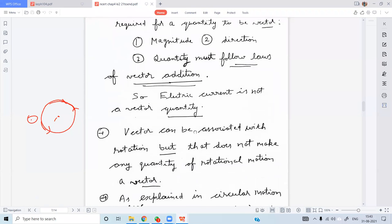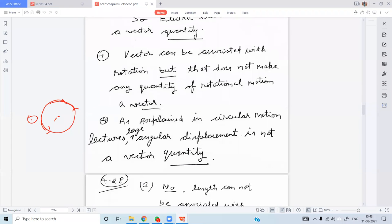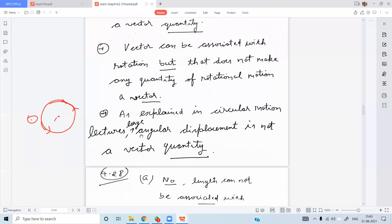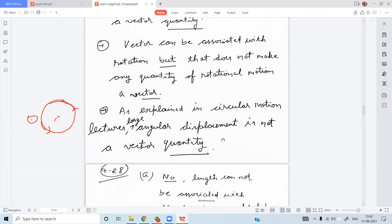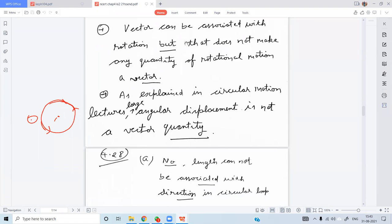So for problem 4.27: A vector can be associated with a rotation, but it does not make any quantity of rotational motion a vector. As explained in the circular motion lectures, large angular displacement is not a vector quantity. Clear? Thank you.